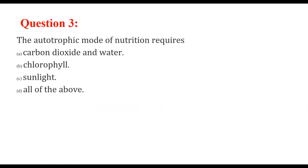The autotrophic mode of nutrition requires — autotrophic, auto means self — so the nutrition or making food by yourself, especially indicated by plants. So what do they require? They require carbon dioxide, water, chlorophyll, as well as sunlight. So our answer would be all of the above.